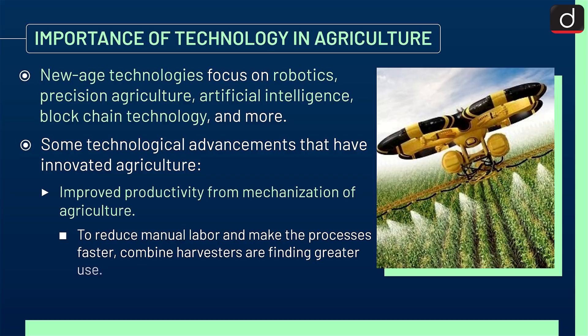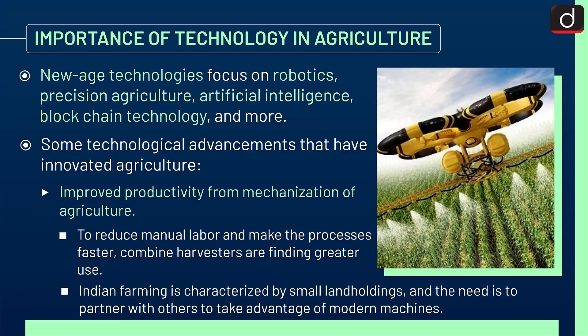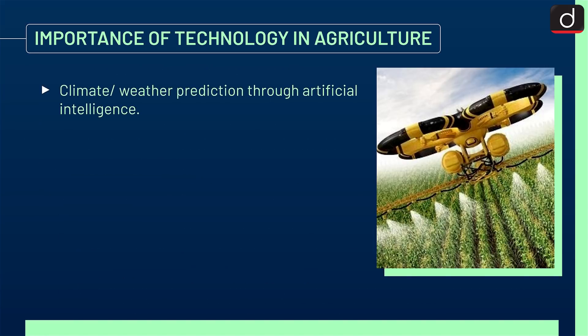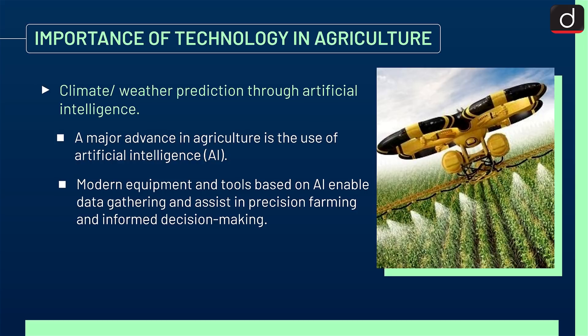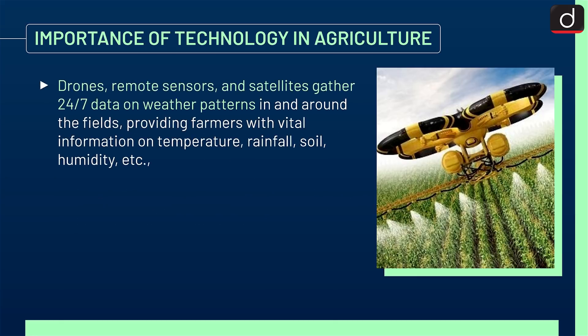A major advance in agriculture is the use of Artificial Intelligence. Modern equipment and tools based on AI enable data gathering and assist in precision farming and informed decision-making. Drones, remote sensors, and satellites gather 24/7 data on weather patterns in and around the fields, providing farmers with vital information on temperature, rainfall, soil, humidity, etc.